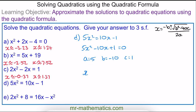So x = (5 ± 2√5) / 5, which gives approximate solutions of x ≈ 0.106 and x ≈ 1.89.